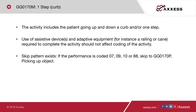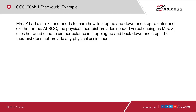One-step curb — GG0170M: this activity includes the patient going up and down a curb and/or one step. Use of assistive devices and adaptive equipment should not affect coding. A skip pattern exists: if the performance is coded 07, 09, 10, or 88, skip to GG0170P, picking up an object. Example: Mrs. Z had a stroke and needs to learn to step up and down one step to enter and exit her home. At start of care, the physical therapist provides needed verbal cueing as Mrs. Z uses the quarantine rail to aid her balance in stepping up and back down.